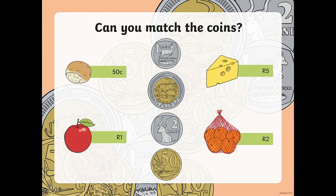Can you match the coins? This roll is 50 cents — can you guess which coin it is? If you pointed to the coin at the bottom of the list, you are correct. The big brown coin with the 50 cent on it is 50 cents. Then the apple says 1 rand — point to the coin that you think is 1 rand. If you pointed to the top coin, you are correct. Then we have a little block of cheese for 5 rand — point to the coin that says 5 rand. If you pointed to the second coin, you are correct. And lastly, we have a bag of oranges for 2 rand — point to the coin that says 2 rand. If you pointed to the third coin, you are correct.